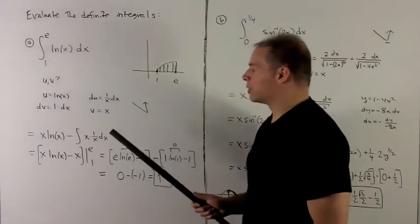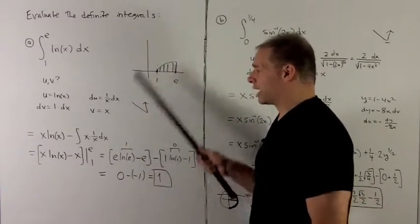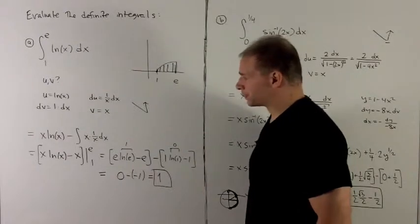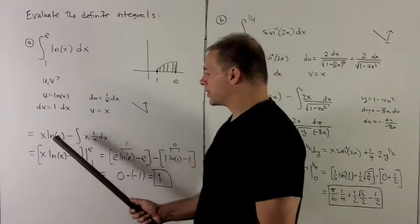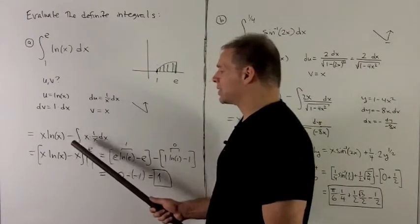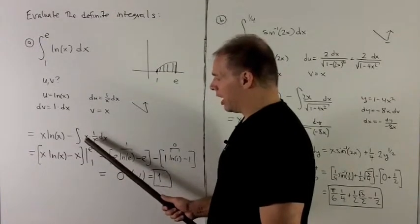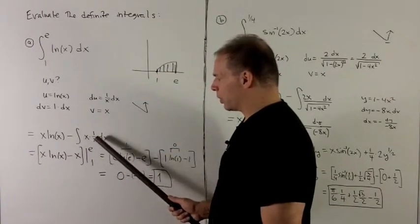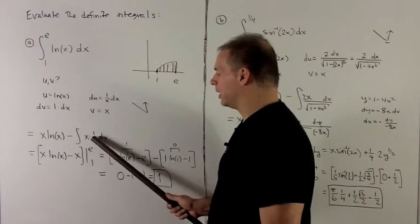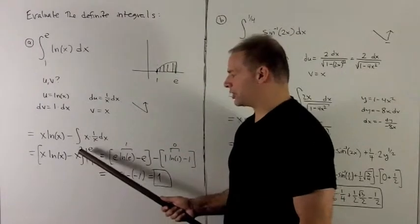The integration by parts rule says multiply along the diagonal, subtract the integral as you go up. So that's going to give us x natural log x minus the integral of x times 1 over x dx, but that collapses to 1. The antiderivative of 1 is just x.